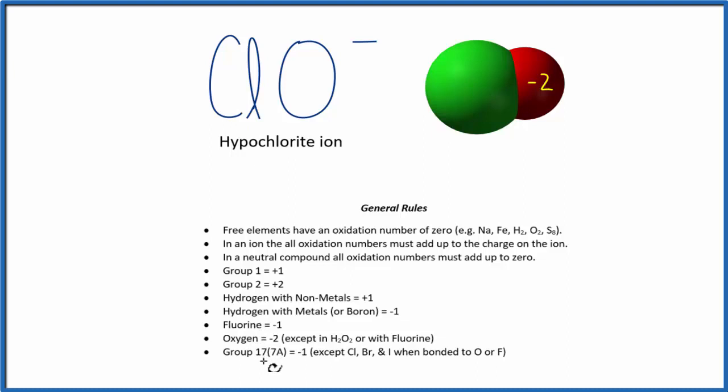which is in group 17, it has a negative 1 oxidation number, except when it's bonded to certain elements, and one of them is the oxygen here. So we really can't use this rule to figure out the oxidation number of the chlorine.